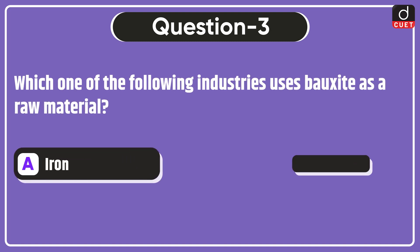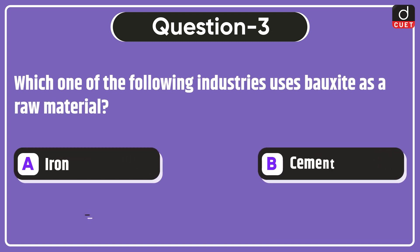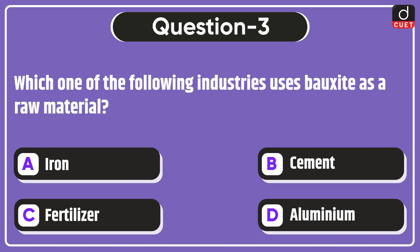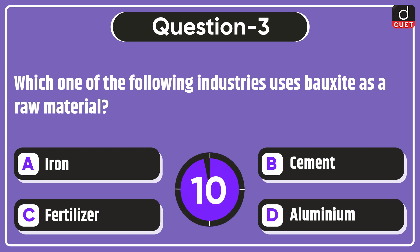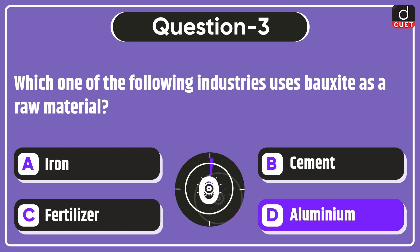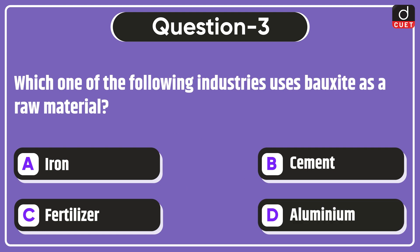Next question: which one of the following industries uses bauxite as a raw material? Iron, cement, fertilizer, or aluminium? The correct answer is option D — aluminium.